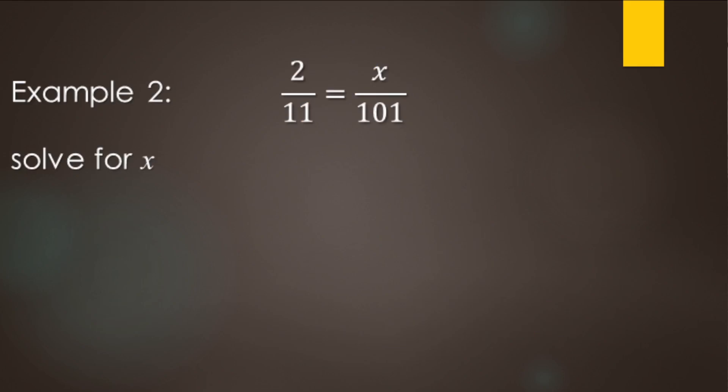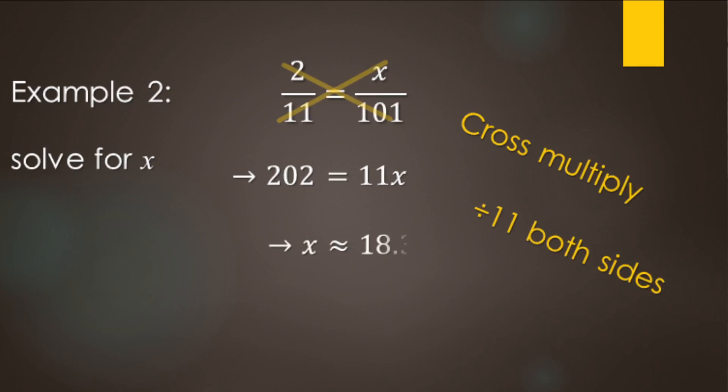Another example here, we're just doing cross multiply and divide. So 2 times 101 makes 202. And then 11 times x, that's going to make 11x. And then we divide 11 to both sides to get x by itself. So that's going to be about 18.36. Most likely you'll be using a calculator with this one.